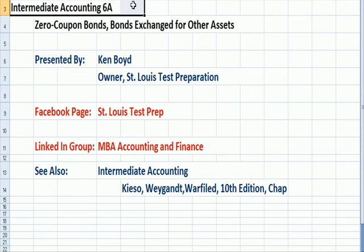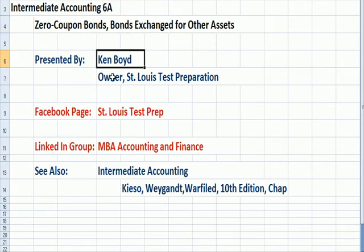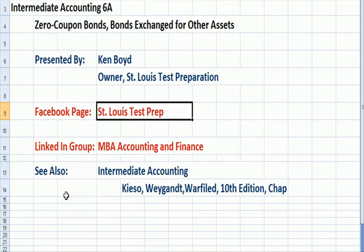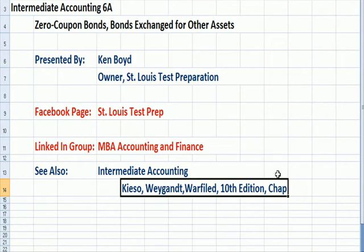Intermediate Accounting 6A: Zero Coupon Bonds and Bonds Exchange for Other Assets. This is Ken Boyd, the owner of St. Louis Test Preparation. Here's our Facebook page, St. Louis Test Prep. This was taken from the Intermediate Accounting text, Kieso Weygandt, 10th edition, Chapter 7.